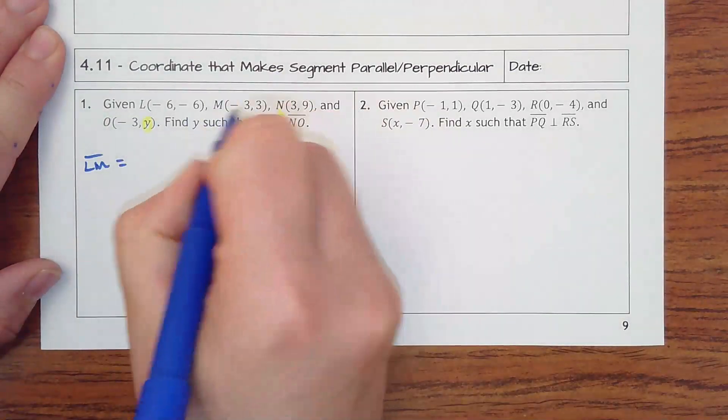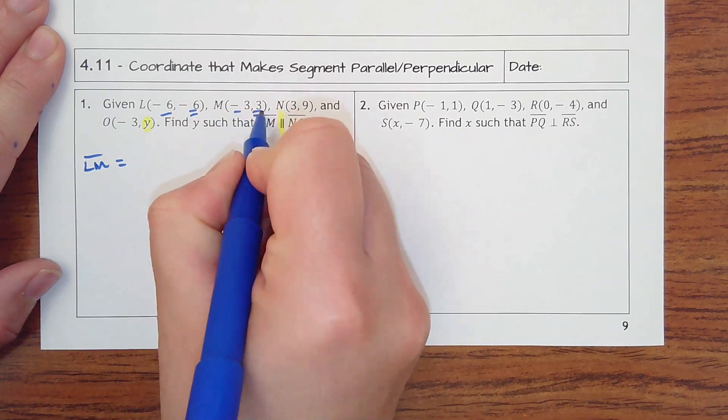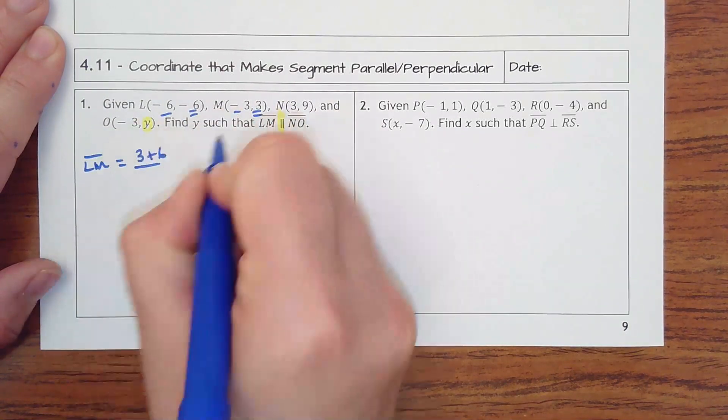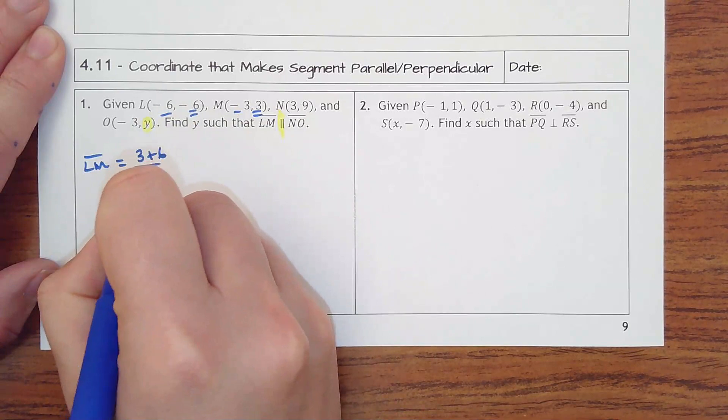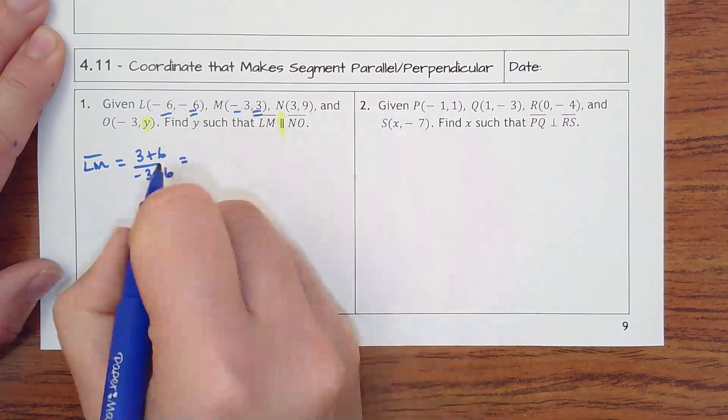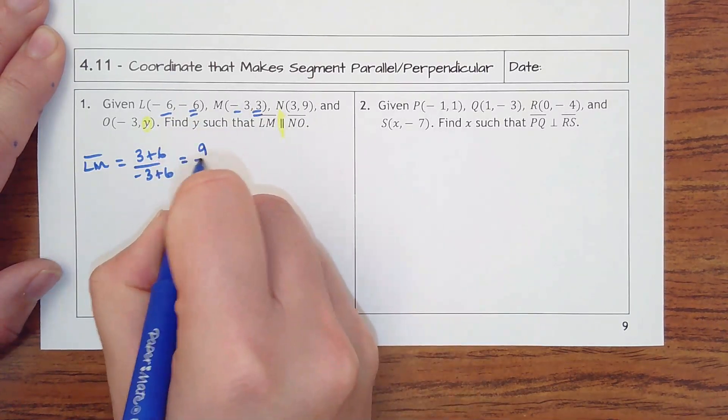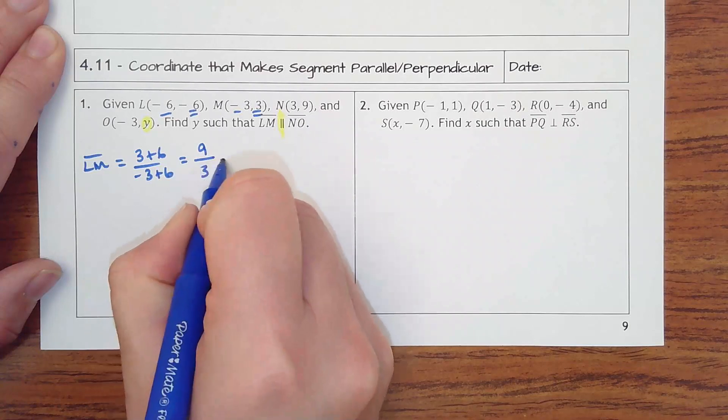And then that's going to be 3 minus negative 6, so 3 plus 6 over negative 3 minus negative 6 plus 6. That would be 3 plus 6 is 9, 6 minus 3 is 3. Slope is 3.